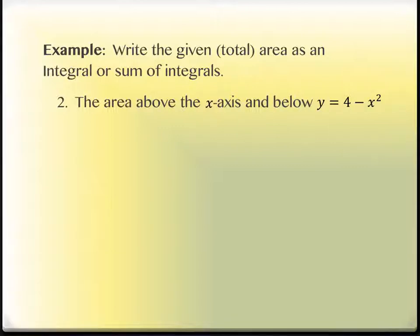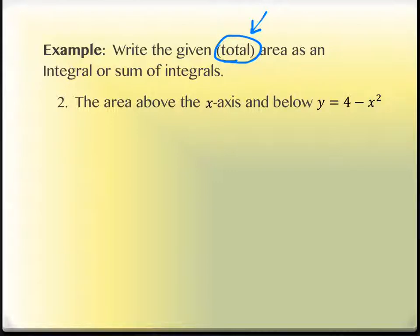This next one, we're going the other direction. It says: write the given total area as an integral or sum of integrals. The fact that this says 'total area' is important. The idea is the same description in reverse from the first problem. This one says we want the area above the x-axis and below y equals 4 minus x squared. Write down what you think notationally you would be finding to give this description — there's something blatantly omitted here.